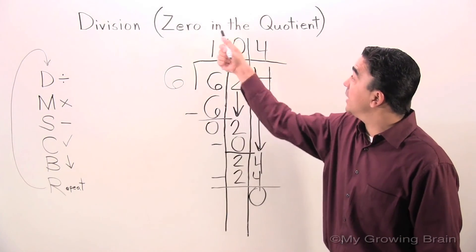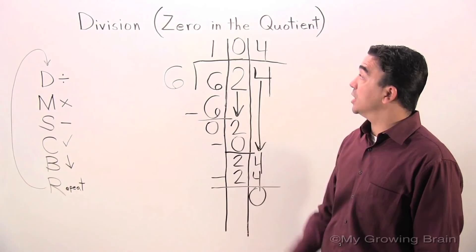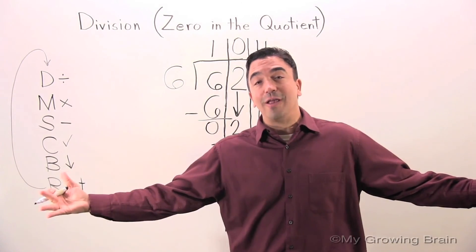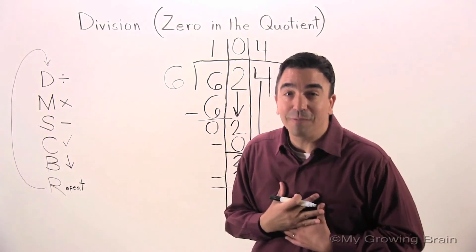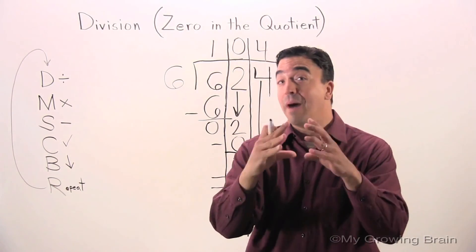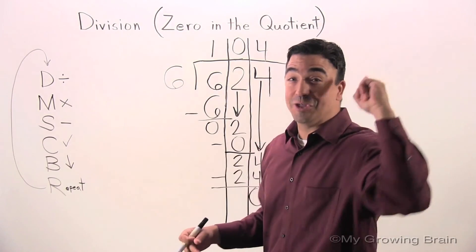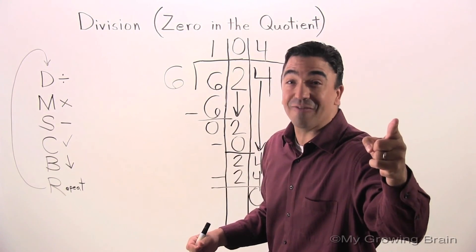Zero in the quotient — this concludes our lesson. Coach Mike at My Growing Brain — Challenge Yourself. Let's bump.